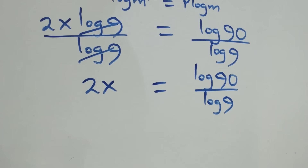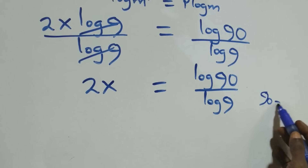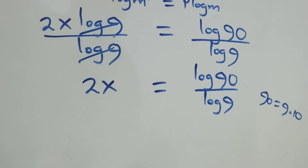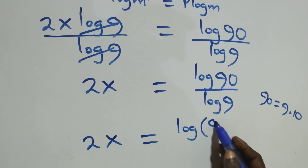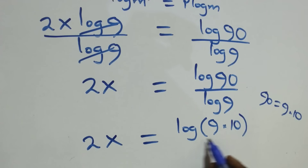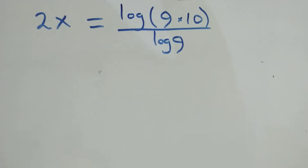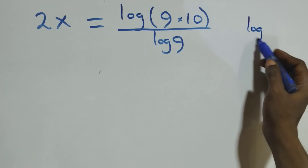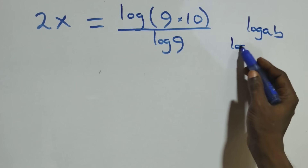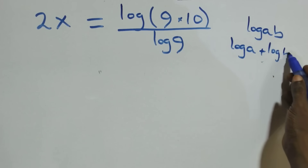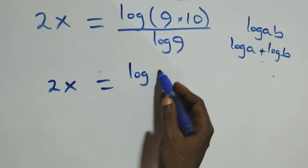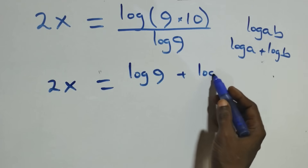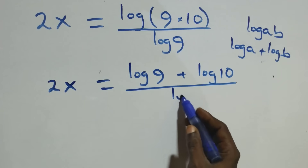The next step: we can write 90 as 9 times 10. Using the rule log(a·b) = log a + log b, what we have becomes 2x equals log 9 plus log 10, all over log 9.